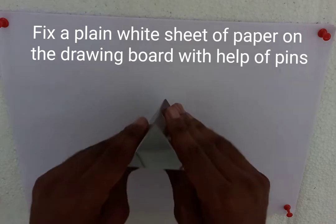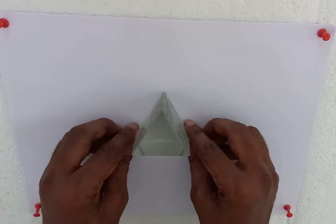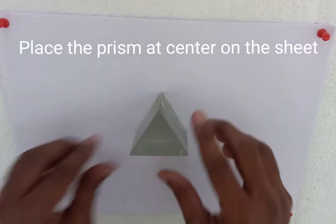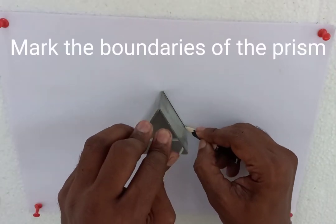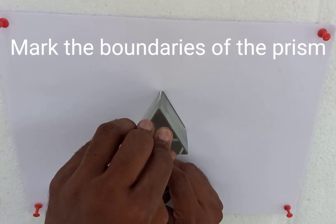Fix a plain white sheet of paper on the drawing board. Place the prism at the center on the sheet. Mark the boundaries of the prism.